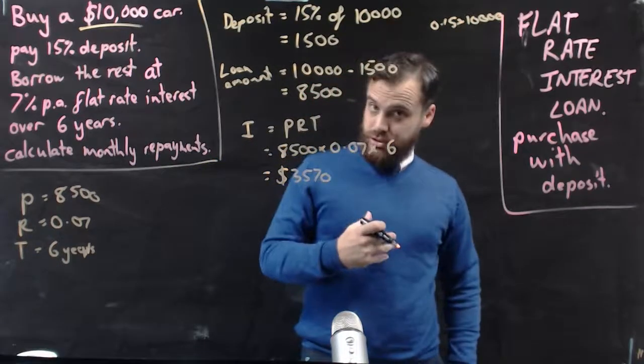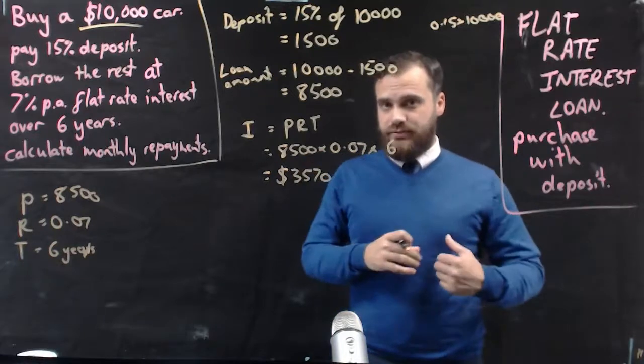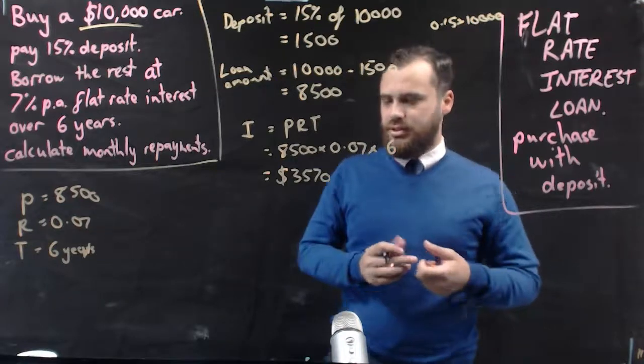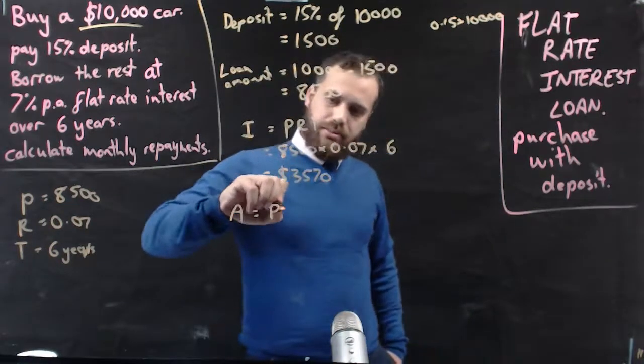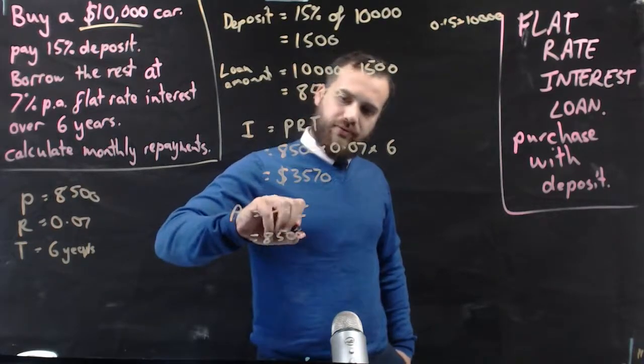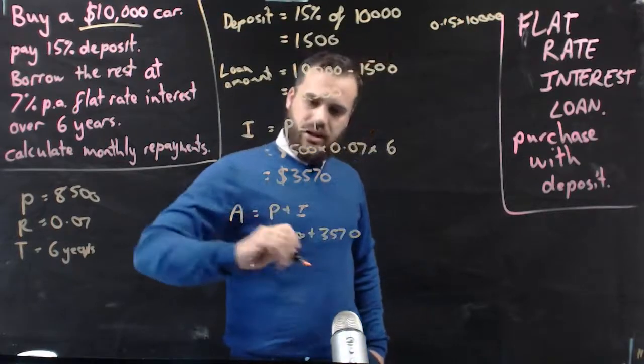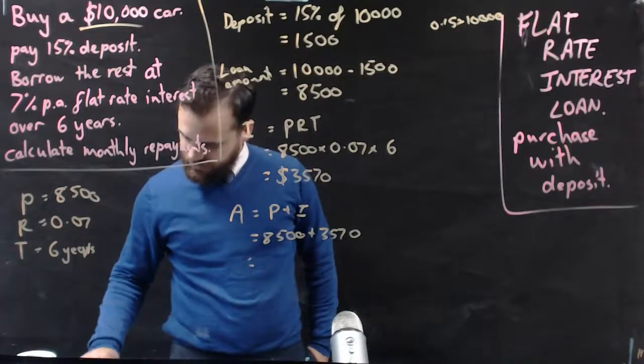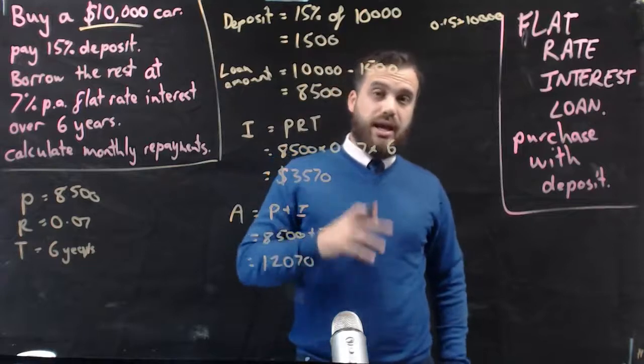Now that's the interest. Okay, that's the interest that I'm going to owe on this loan. So I borrowed $8,500. There's $3,570 interest. So the total amount that I need to repay is P plus I. P was $8,500. I is $3,570. If I do that on my calculator, I get $12,070 as my A value.